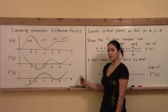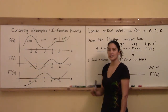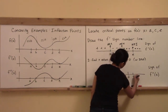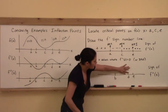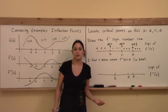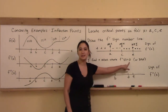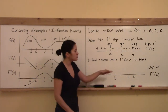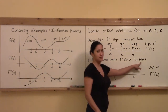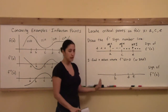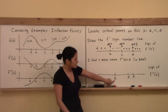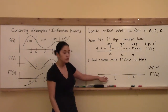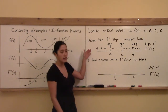For what letter values of x is the second derivative equal to zero? Those are the x-intercepts on the second derivative graph: B, D, and E. So those are the places I tick off. Zero is the dividing line between positive and negative values — you can't jump from negative to positive unless you go through zero. That means within each region between tick marks, the second derivative has one consistent sign.